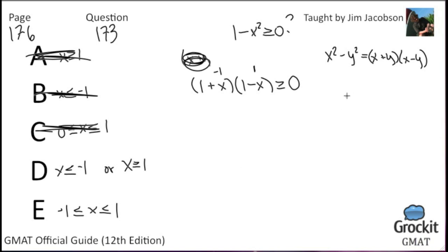We have x is less than or equal to negative 1 or x is greater than or equal to 1, or x is between the two numbers. Imagine a number line. One answer choice is saying this. That's actually answer choice E. Another answer choice is saying this, and that's D. What happens if x is greater than 1? This ends up being a positive number.